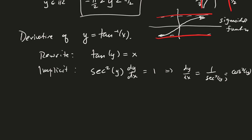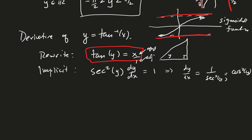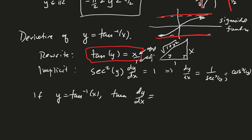I want the derivative in terms of x. The equation tangent(y) = x defines a triangle where tangent equals opposite over adjacent, so opposite is x, adjacent is 1, and by the Pythagorean theorem the hypotenuse is √(1 + x²). So cosine squared of y — adjacent over hypotenuse squared — equals 1 over (1 + x²). Therefore if y equals inverse tangent of x, dy/dx equals 1 over (1 + x²).